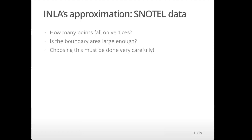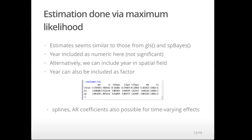The questions when using these meshes include things like how many actual observation locations fall on the vertices of the triangles, or whether the border area around the main mesh is large enough — all of these choices impact our ultimate estimates. By default, INLA does estimation via maximum likelihood. The output looks very familiar because it's exactly the same as what you might get with LM or GLM. INLA is also very flexible in that we can include splines like a GAM or include time-varying effects like a dynamic linear model with a time-varying coefficient.